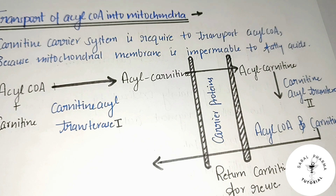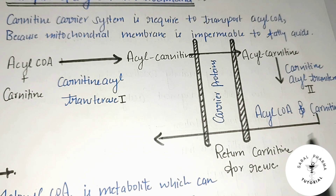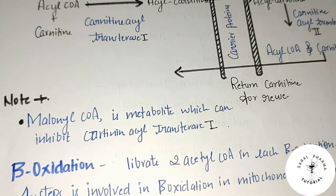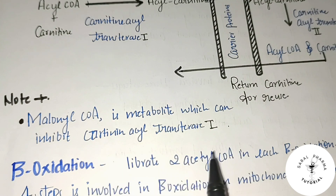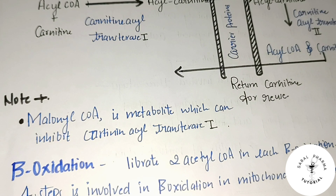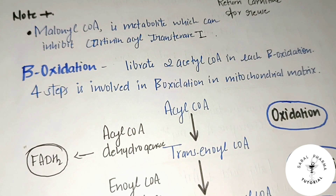The carnitine cycle continues until the fatty acid is fully oxidized in beta-oxidation in the matrix. Free carnitine is returned for re-use. An important exam point: malonyl CoA is a metabolite that inhibits carnitine acyltransferase I — the enzyme responsible for the first step of the carnitine shuttle. Writing this in your exam creates a good impression.